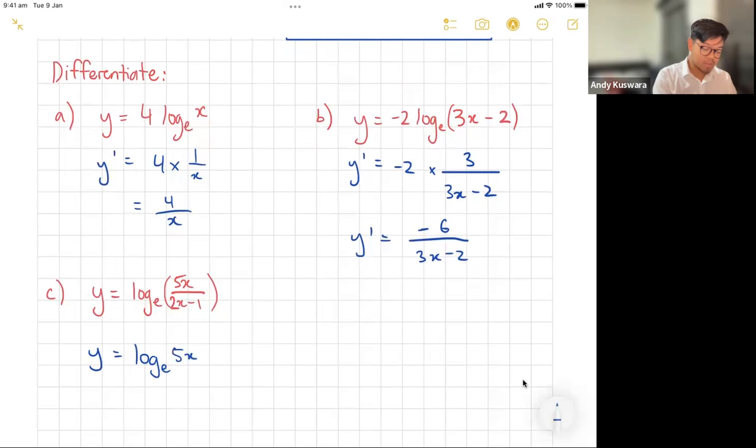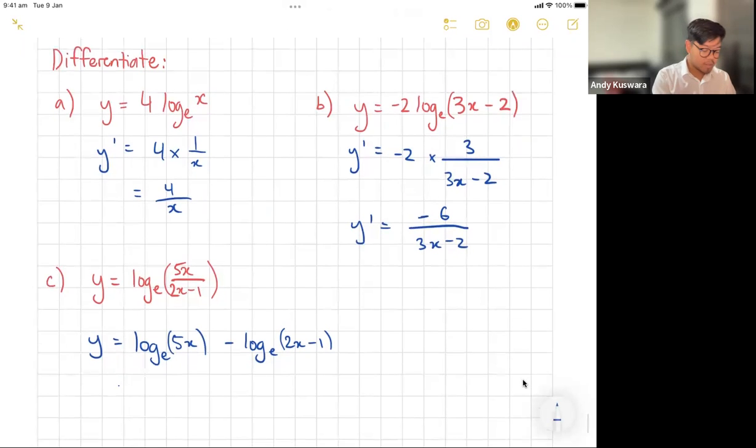Remember log has a law where if we have a quotient in the bracket, it becomes log_e(5x) take away log_e(2x - 1), and I'll put these in brackets so you can kind of see. That there is going back to your log laws from year 11, hopefully you remember those. From here if we go y dash, we're just going to go each term by term.